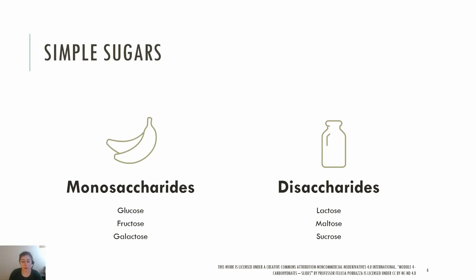Glucose is an important energy source, especially for the brain and nervous system. Glucose is found in fruits, vegetables, honey, and corn syrup. Galactose is almost always found linked to glucose as a disaccharide and rarely in the monosaccharide form in our food supply.